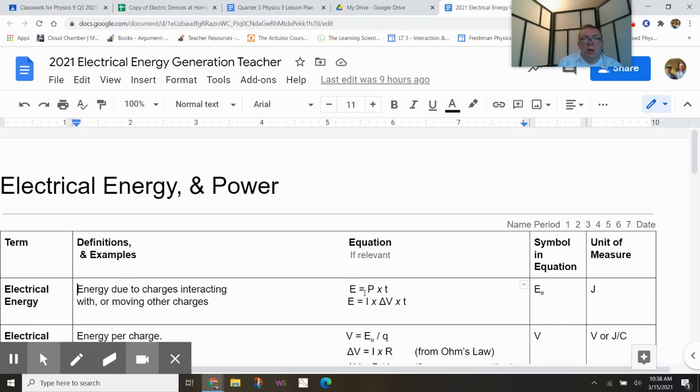An equation: if we take power times time, power is how quickly we use energy. So if we take power times time, that ends up giving us this electrical energy or energy in general. I'm going to put a parentheses around this. The current times the potential difference is the same thing as electrical power. So we're saying another way to calculate this is to say that energy is electrical power times time, current times the potential difference.